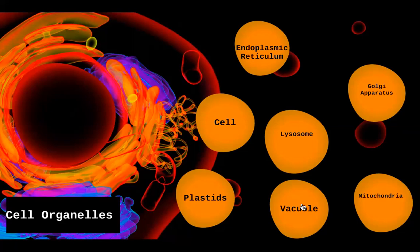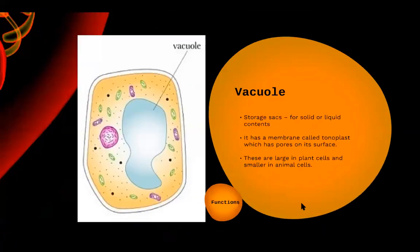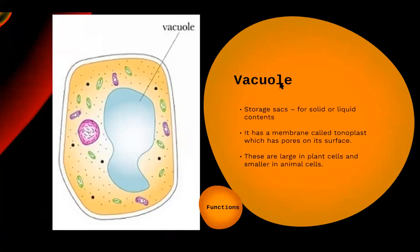We'll now move to the last organelle — vacuole. Vacuoles are also found mostly in plant cells. Plant cells have a large number and large sizes of vacuoles. Vacuoles can be found in animal cells as well, but only in special conditions, and they are generally smaller in size.